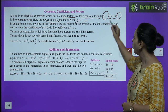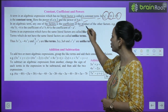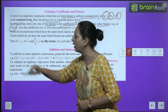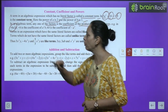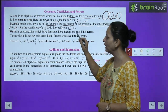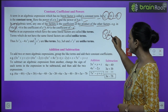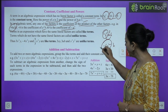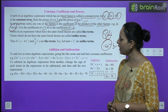In any algebraic term, any one of the factors is the coefficient of the product of the other factors. For example, in the term −6a²b, −6 is the coefficient of a²b. Also, 6b is the coefficient of −a², and −6 is the coefficient of b — whichever factor remains becomes the coefficient.